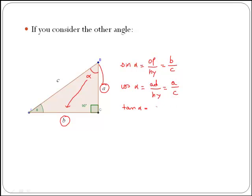Tan of alpha would be opposite over adjacent, therefore B over A.